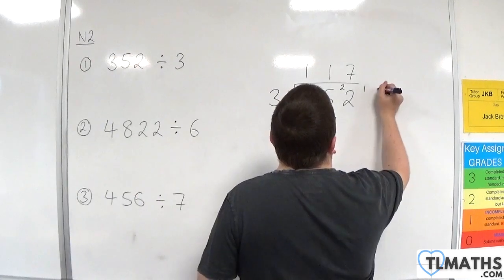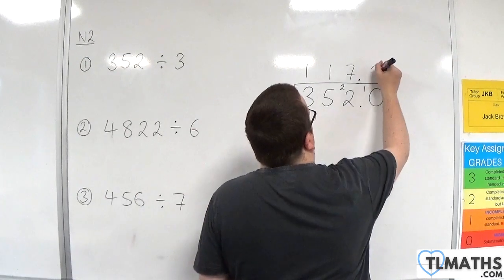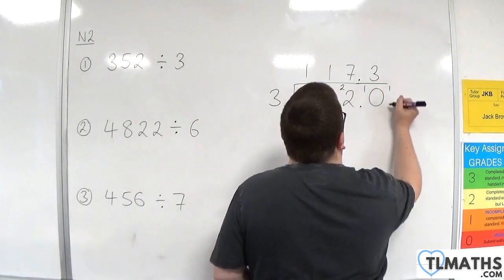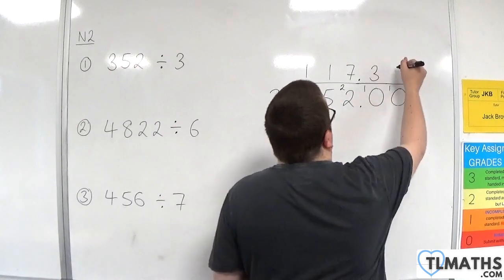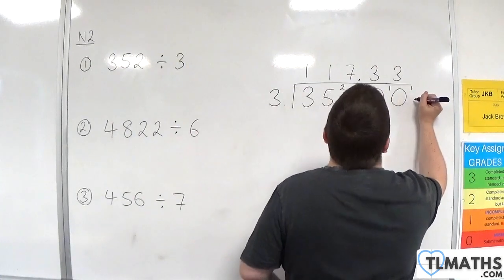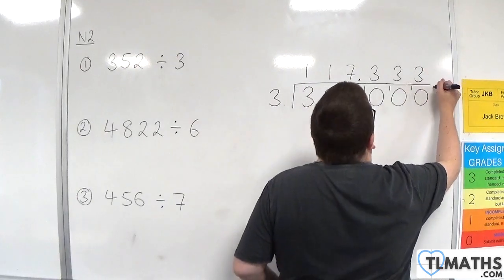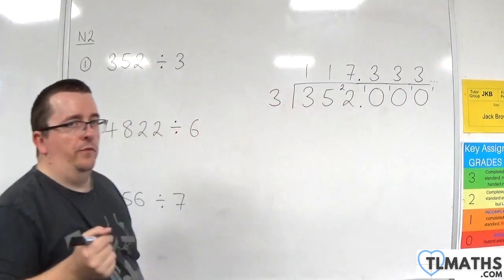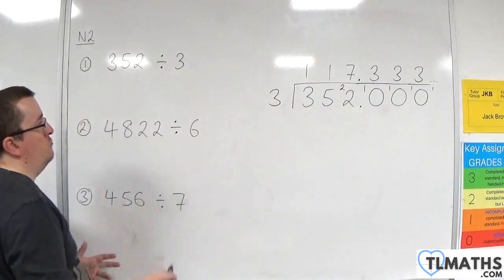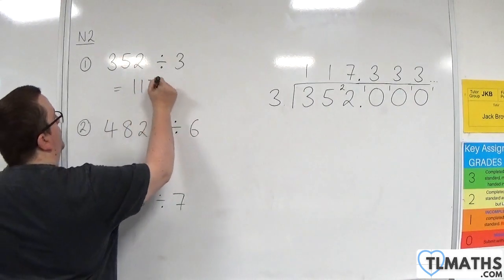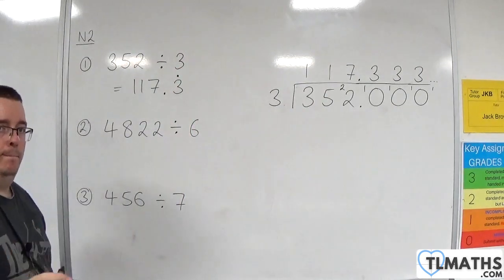Because we've got the 1 hanging there, we're going to have to put in a 0 and go into decimal points. 3s into 10 go 3 with 1 left over. We bring in another 0. 3s into 10 go 3 with 1 left over. That just keeps on going forever. So we have a recurring decimal. This is 117.3 recurring.